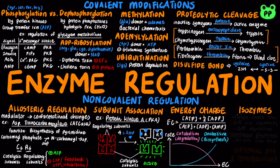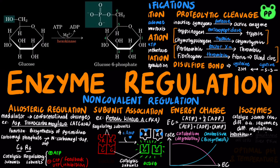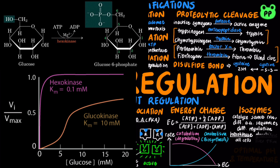Isozymes are enzymes that catalyze the same reaction but contain different amino acid sequences and are regulated differently. For example, hexokinase in glycolysis has four isozymes. The fourth isozyme, known as glucokinase, is found in the liver and has a higher Michaelis-Menten constant, which means it has higher affinity for glucose, serving as a glucose sensor in response to rising or falling levels of glucose.